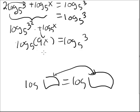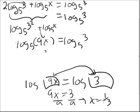And log base 5 of 3. So we now know this is our 9x and this is our 3, so we can set these equal to each other and divide both sides by 9 to get that x equals one-third.